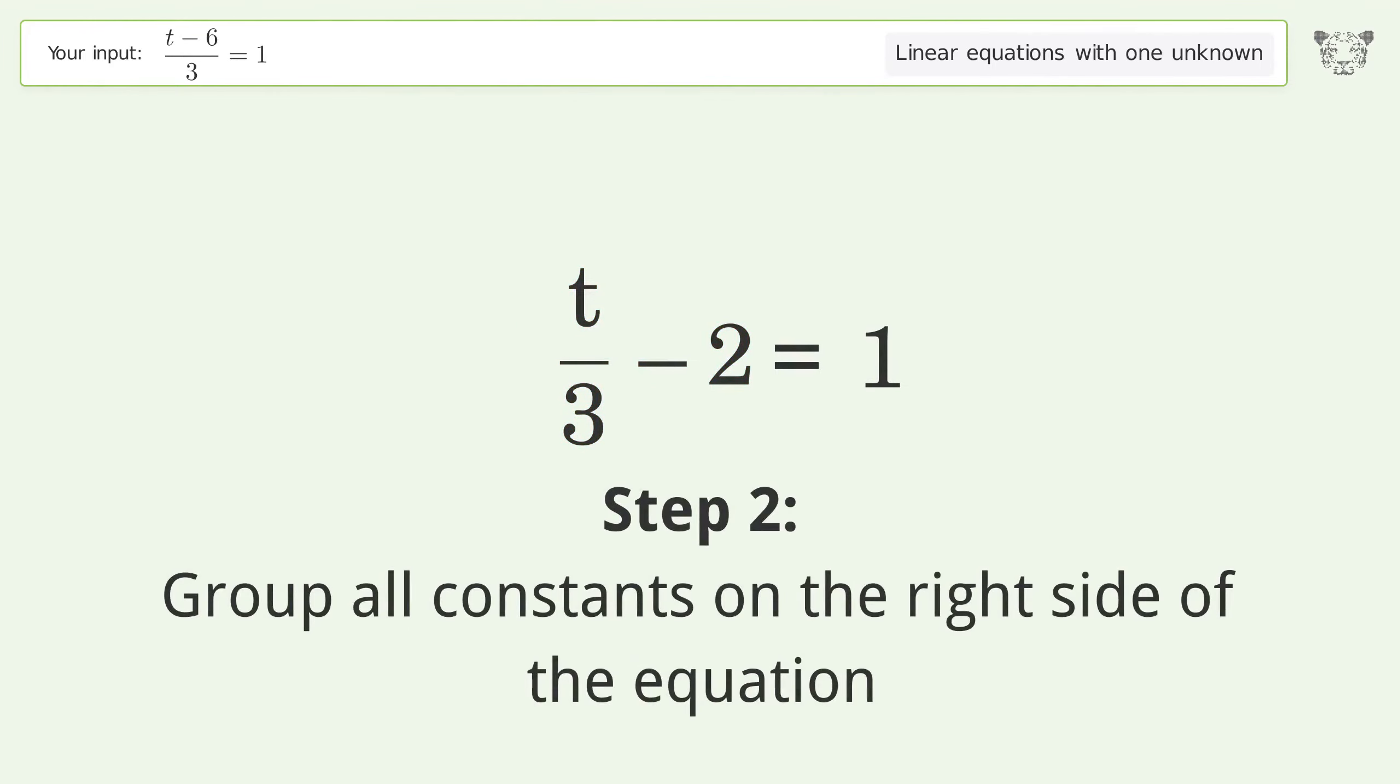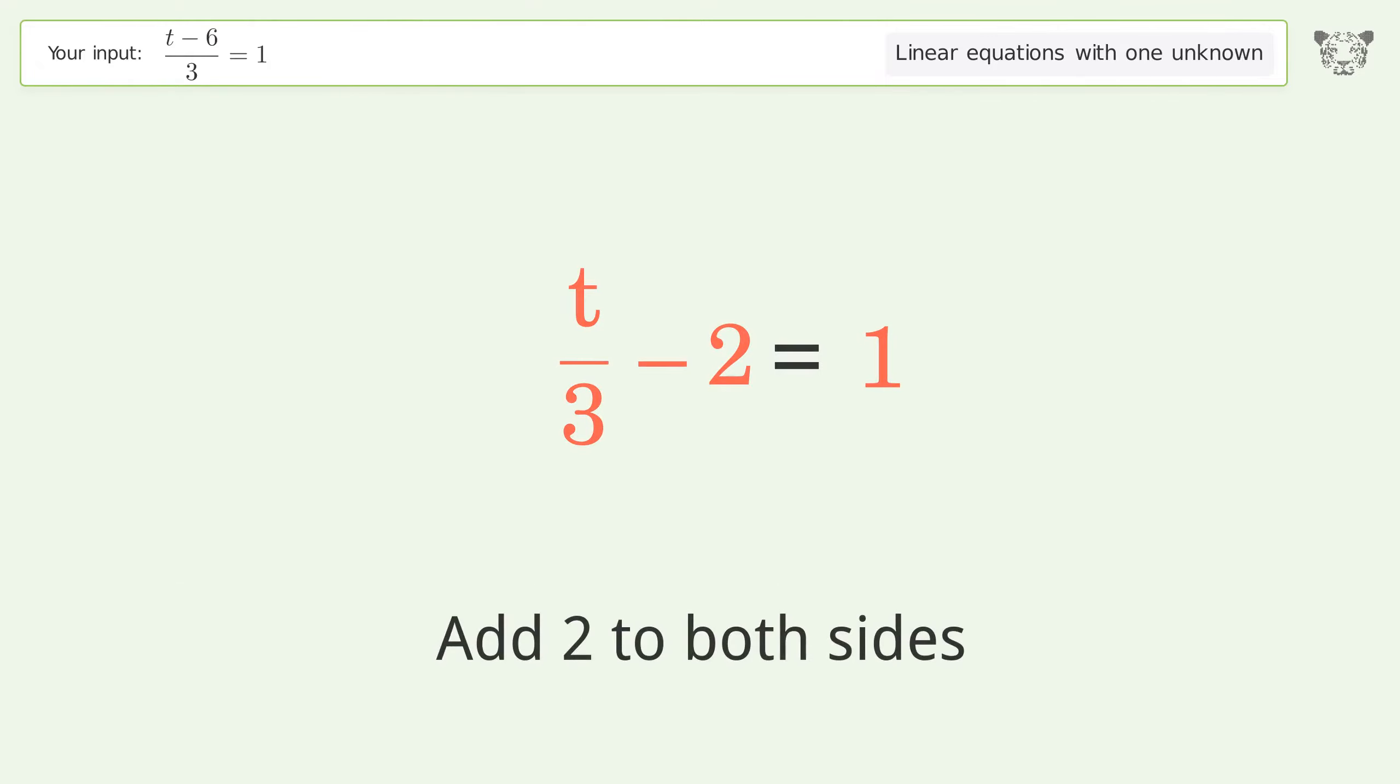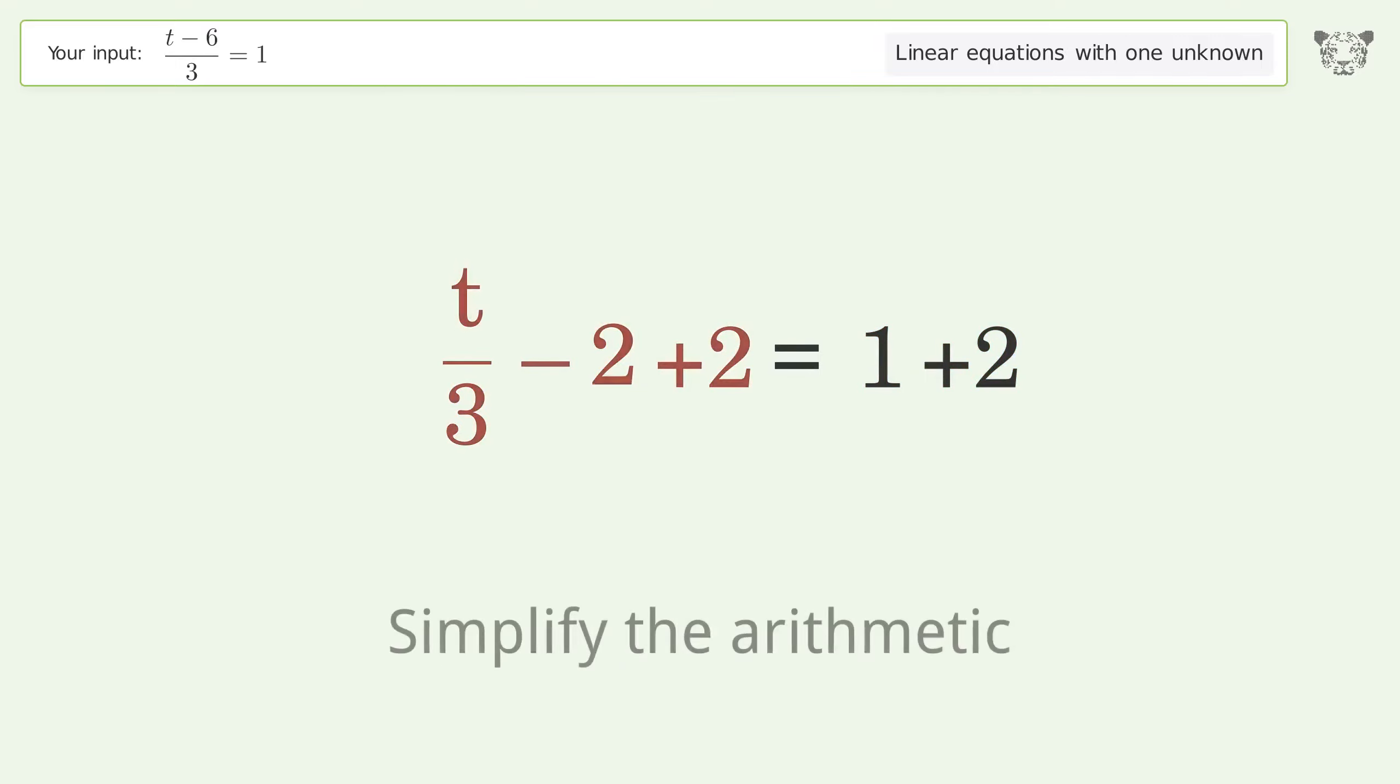Group all constants on the right side of the equation. Add 2 to both sides. Simplify the arithmetic.